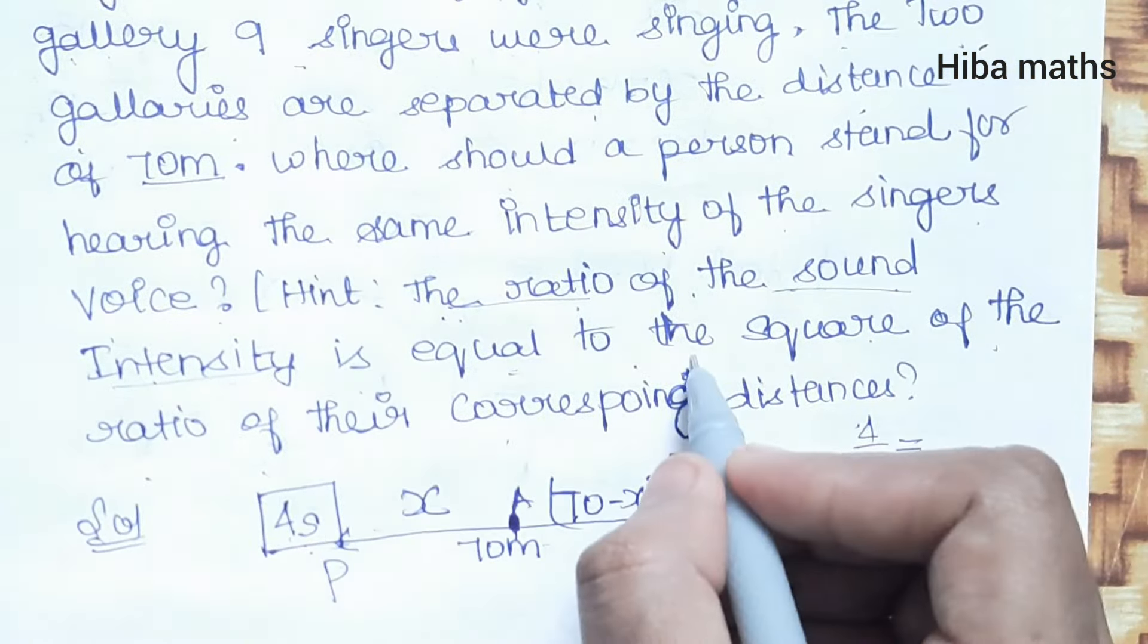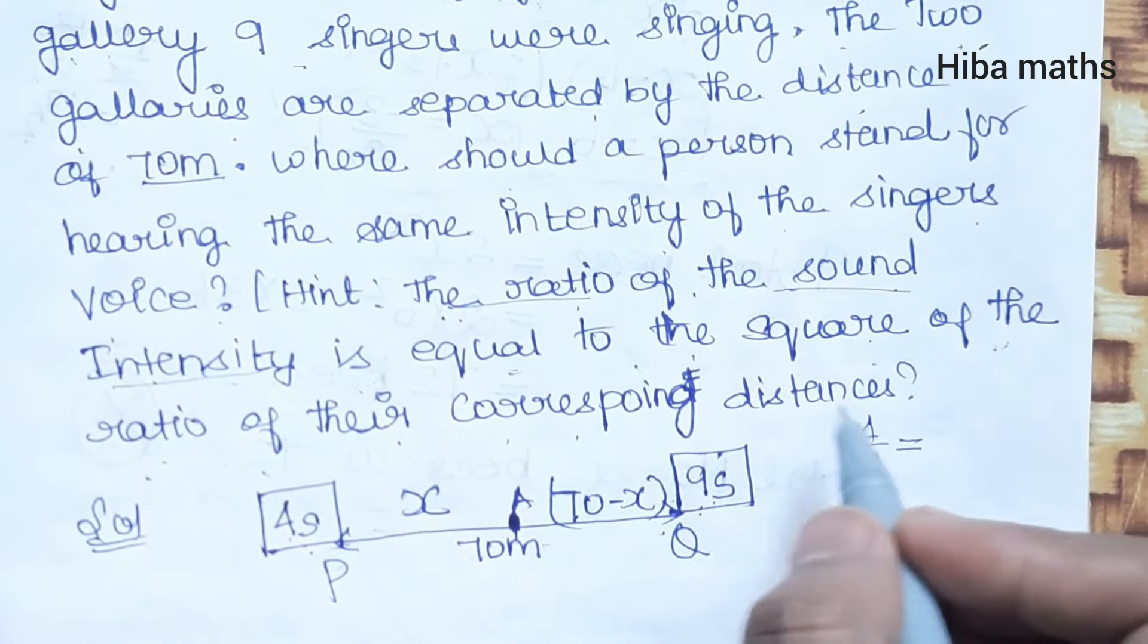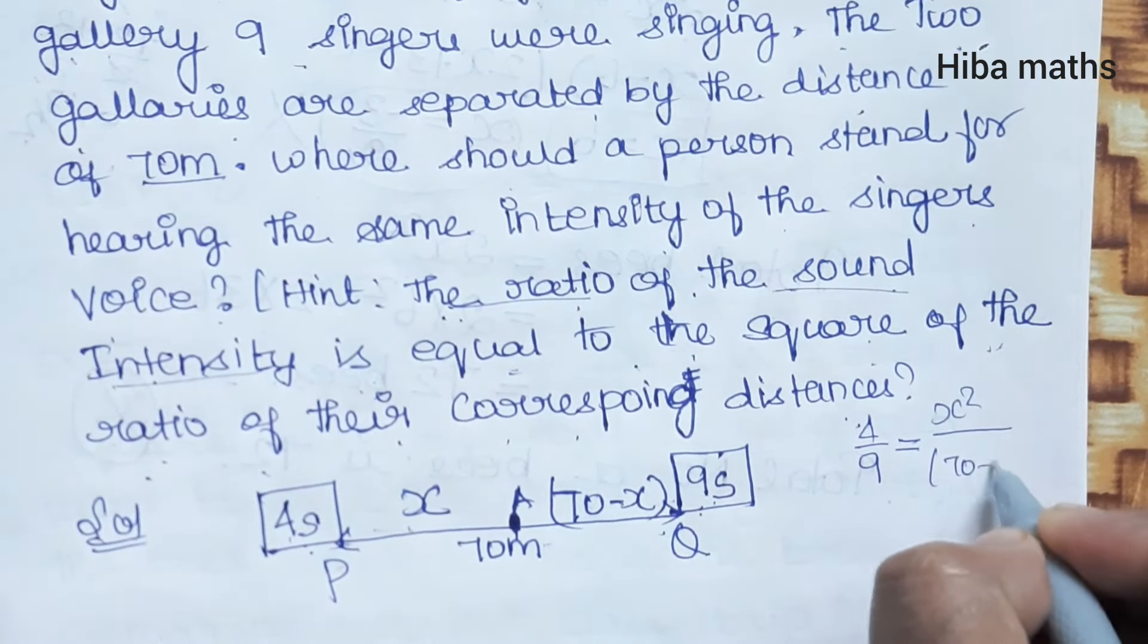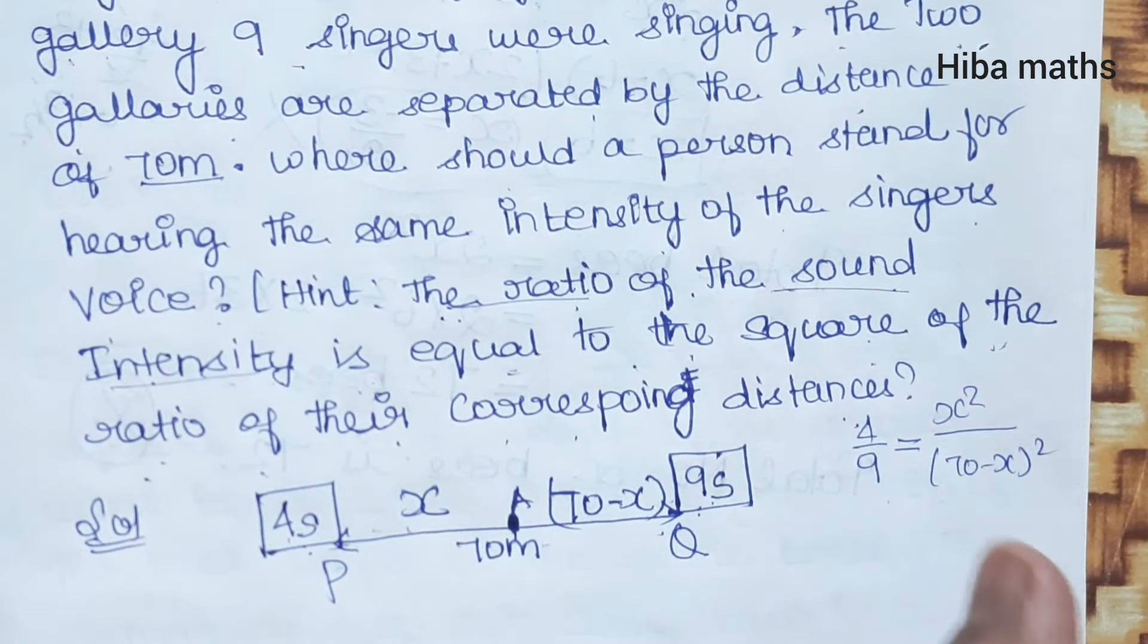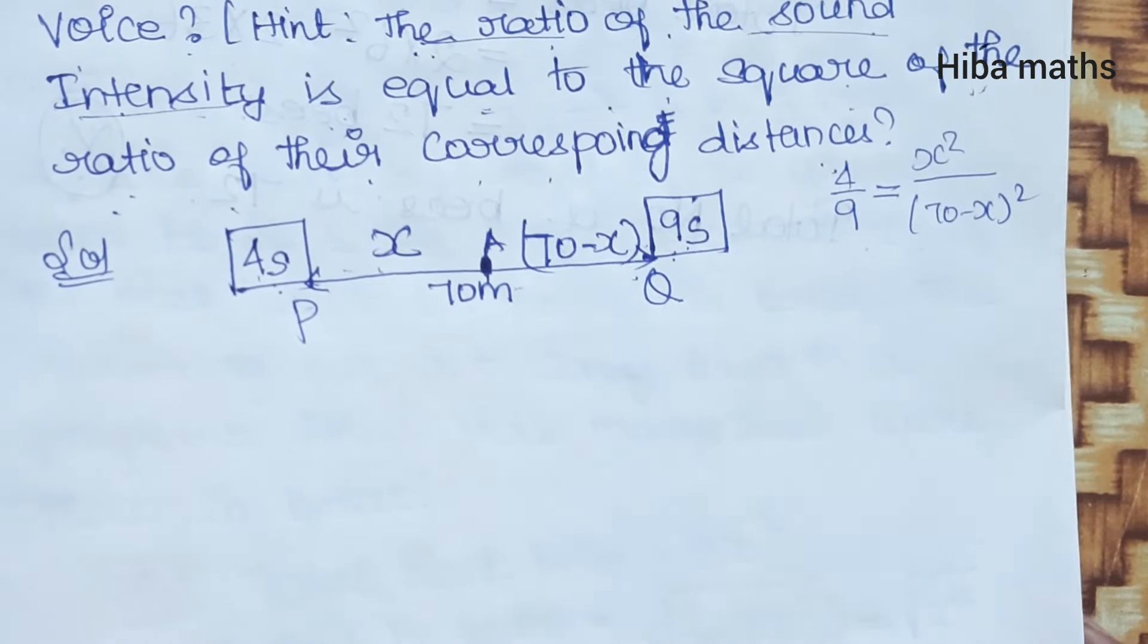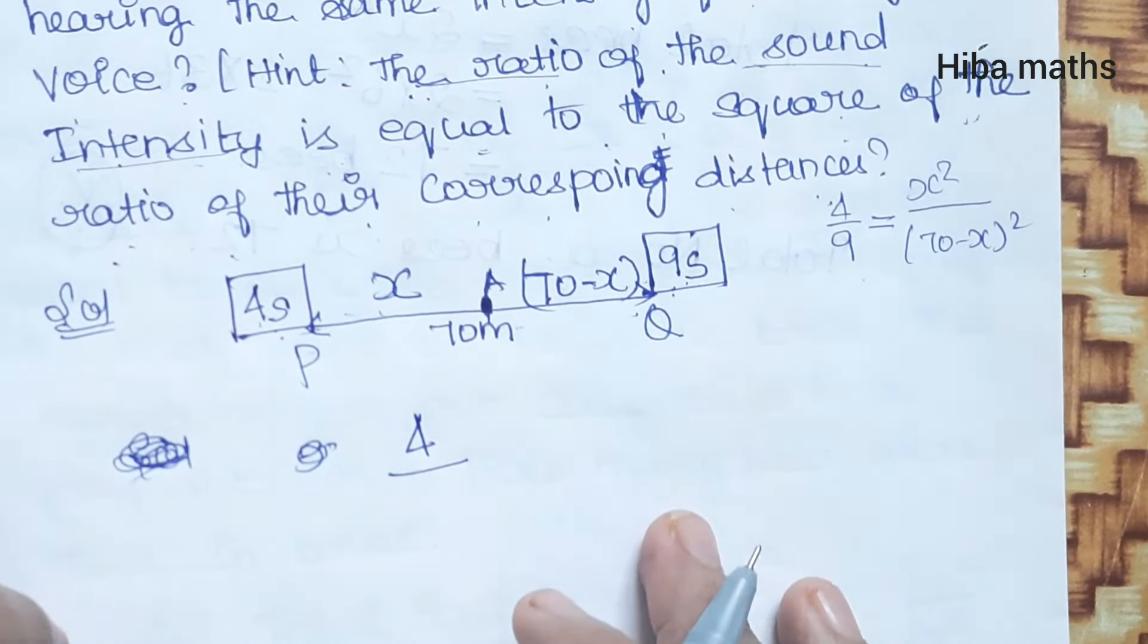This equals the square of the ratio of their corresponding distances. That means x squared over (70 minus x) squared. This equation we can solve. The sound ratio is 4 divided by 9 singers.